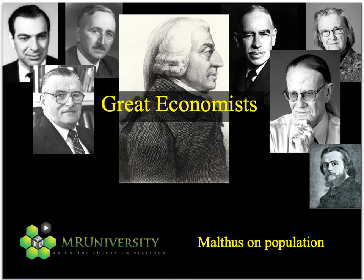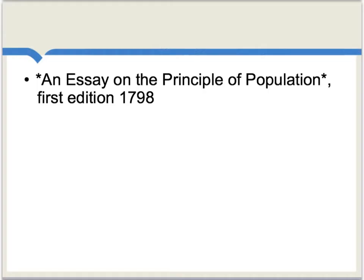Let's consider one of the most influential economics books of all time: Thomas Robert Malthus on Population. It's called An Essay on the Principle of Population, and the first edition was published in 1798. Note there are six editions, and the later editions have more material, more qualifications, and more complexities. But we're going to start with the first edition, which is the simplest and the easiest to read.